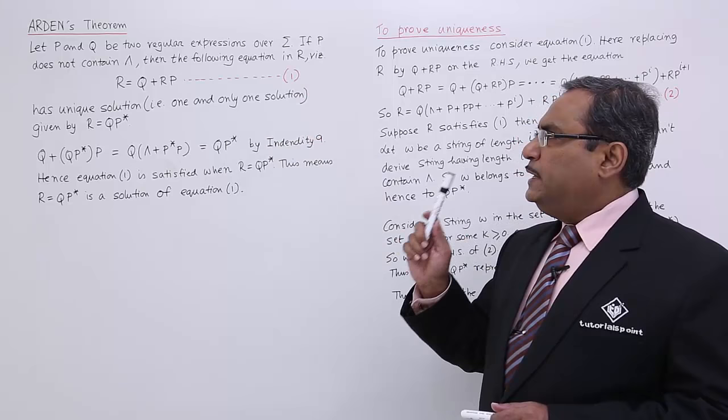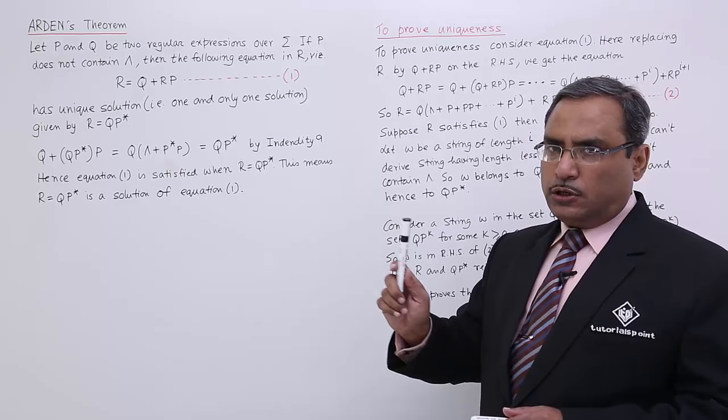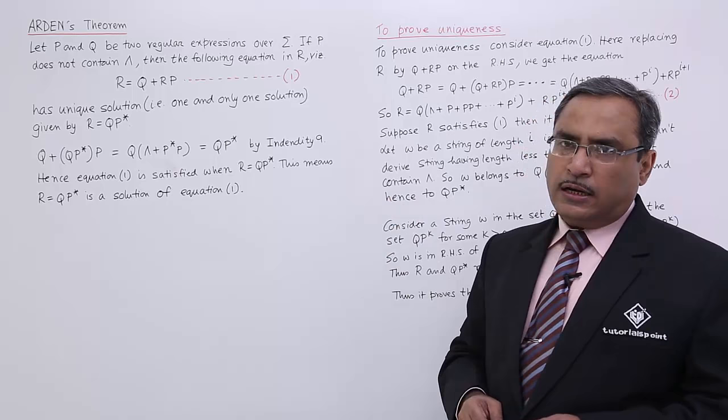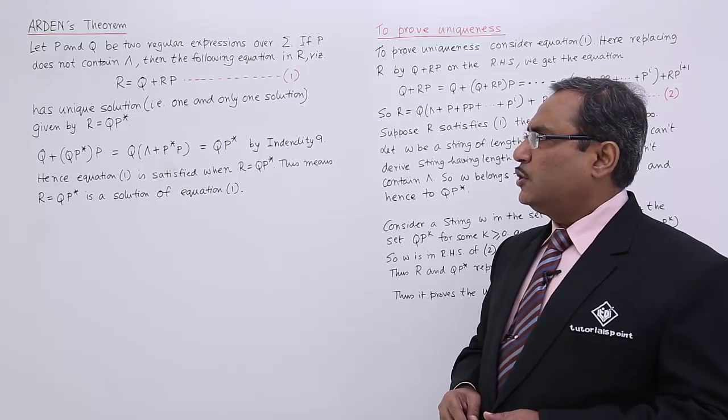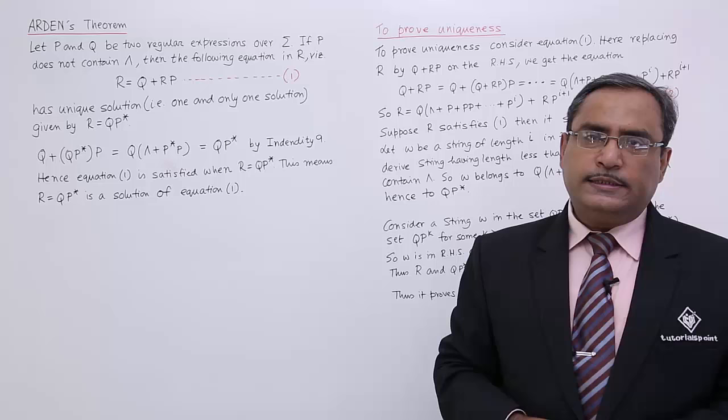If P and Q are two regular expressions over sigma and P does not contain kappa or null, then the equation R = Q + RP has a unique solution — one and only one — given by R = QP*. This is the theorem.